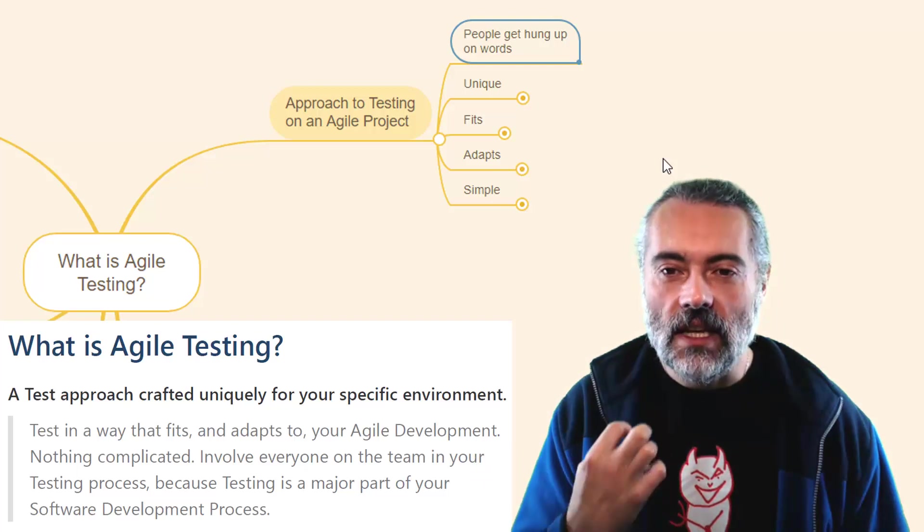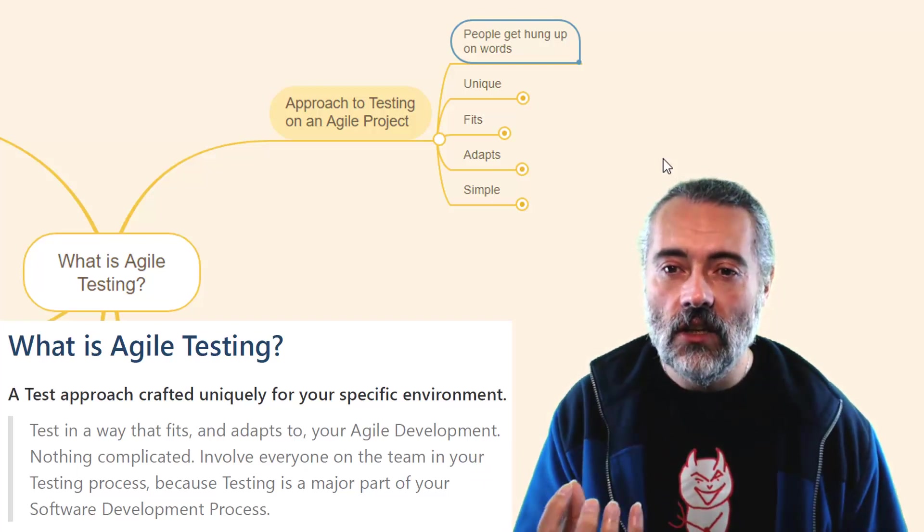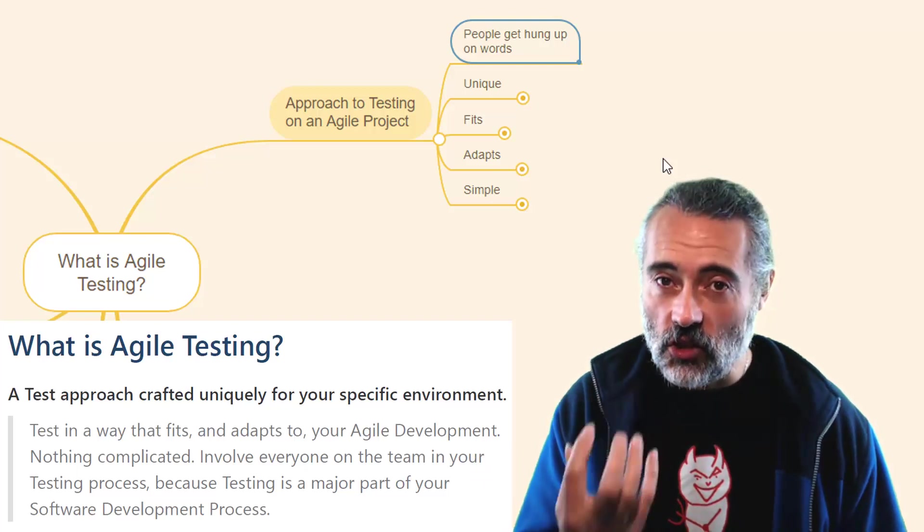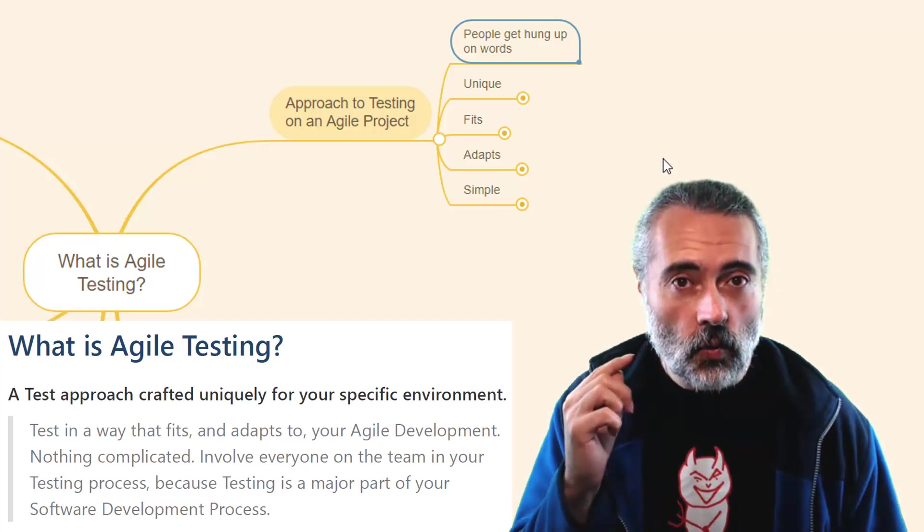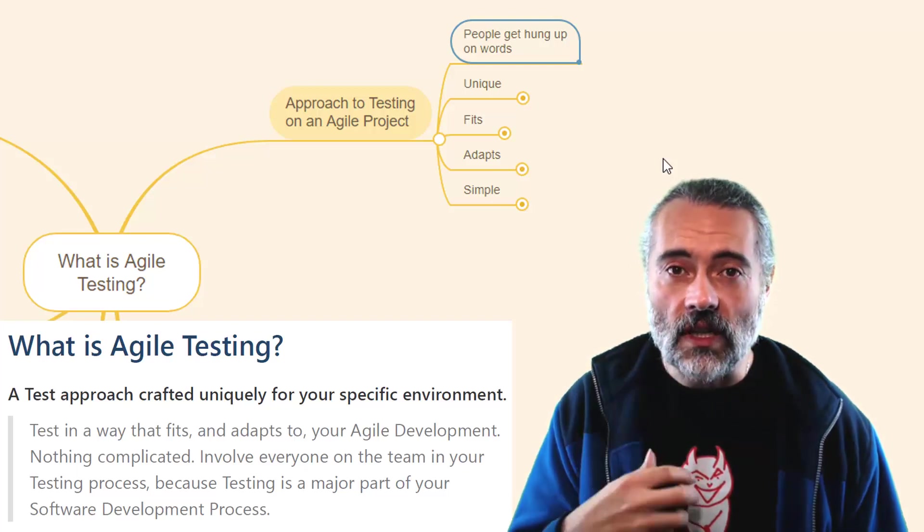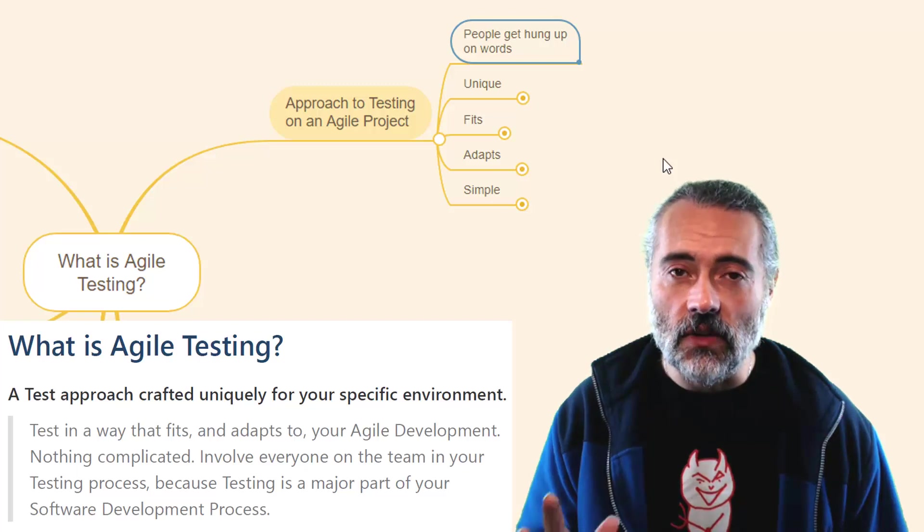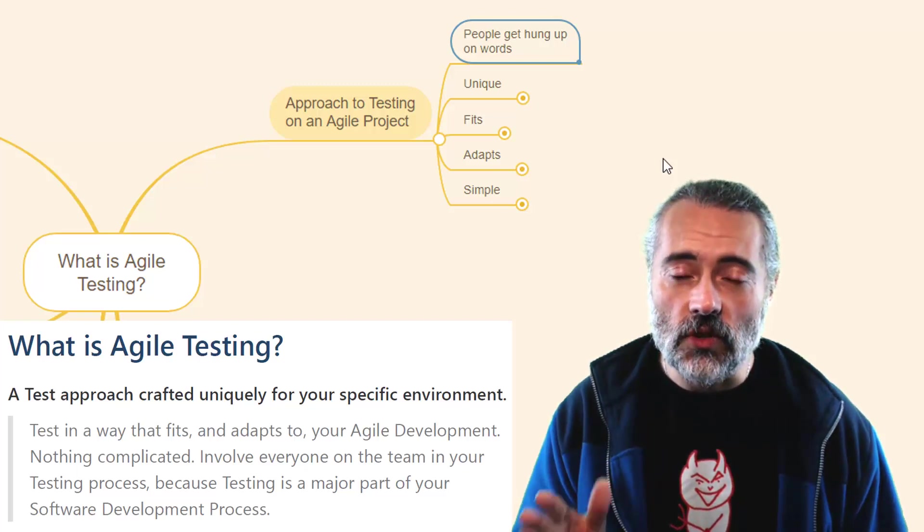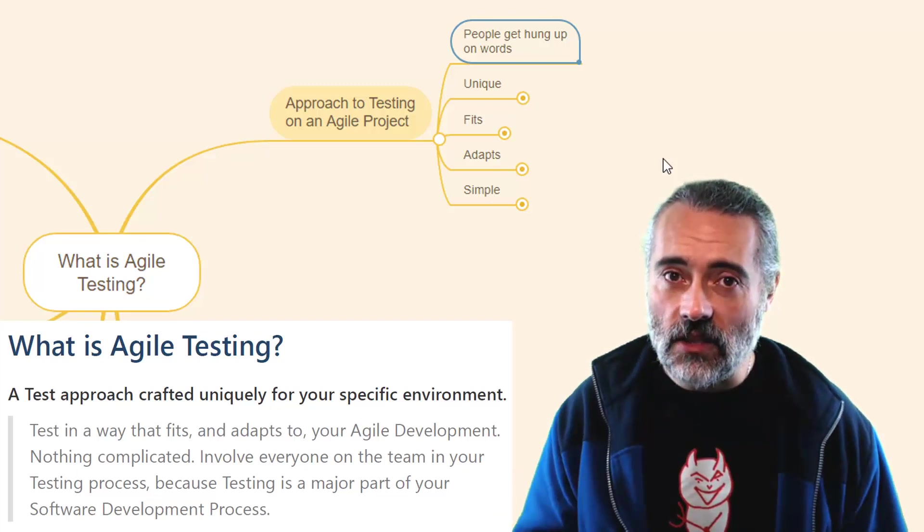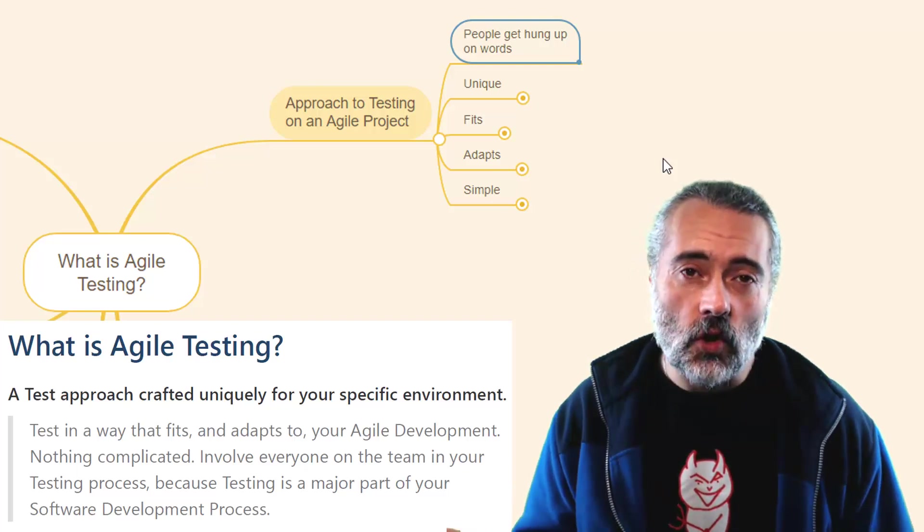What it is, it's a verb. It's an approach. It's a process. It is how we test on an Agile project. It's the stuff we do and the way we think, but it's on an Agile project.